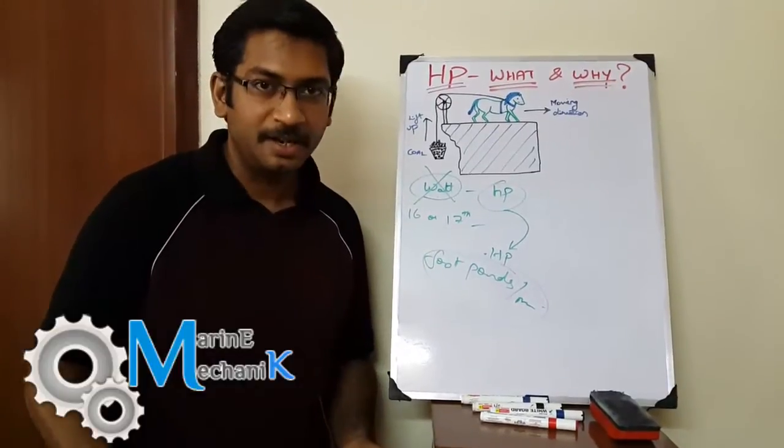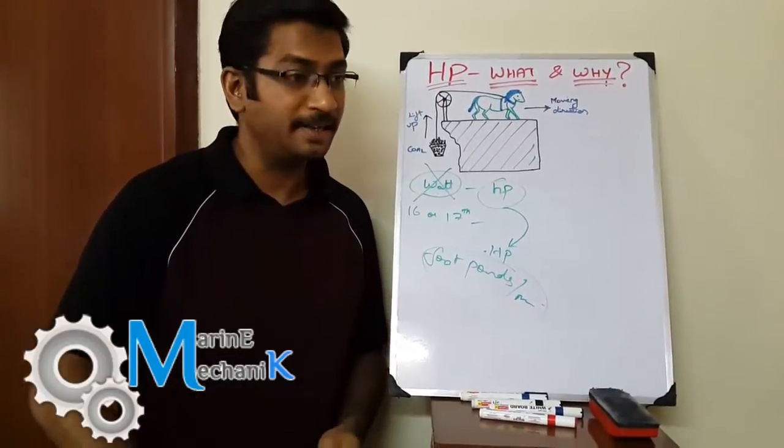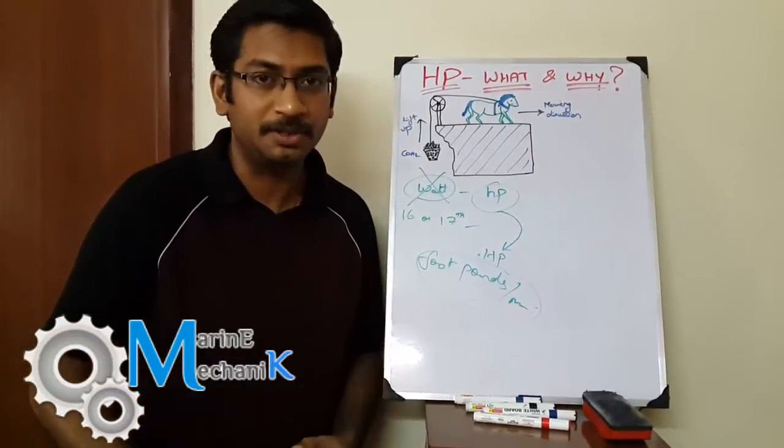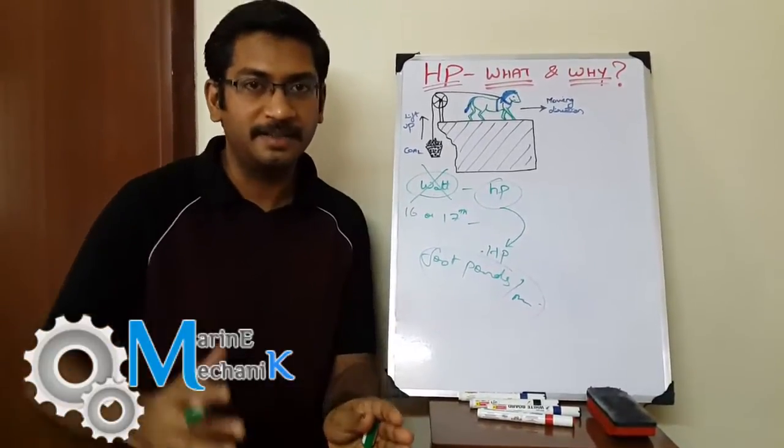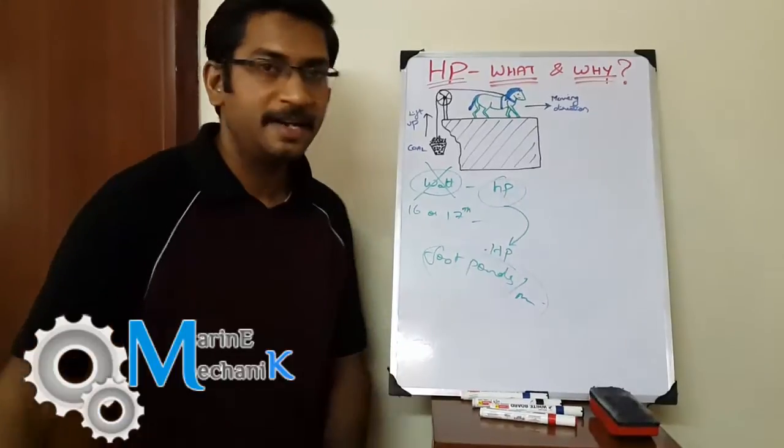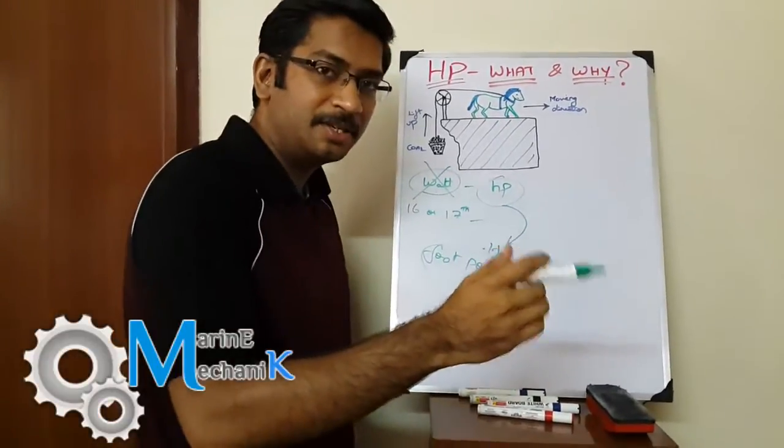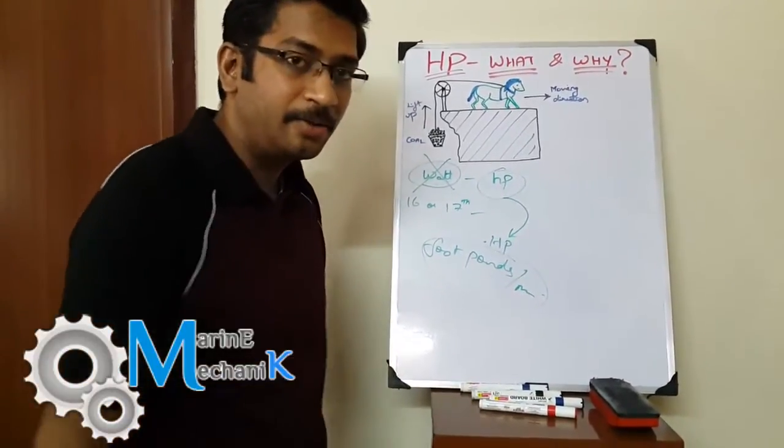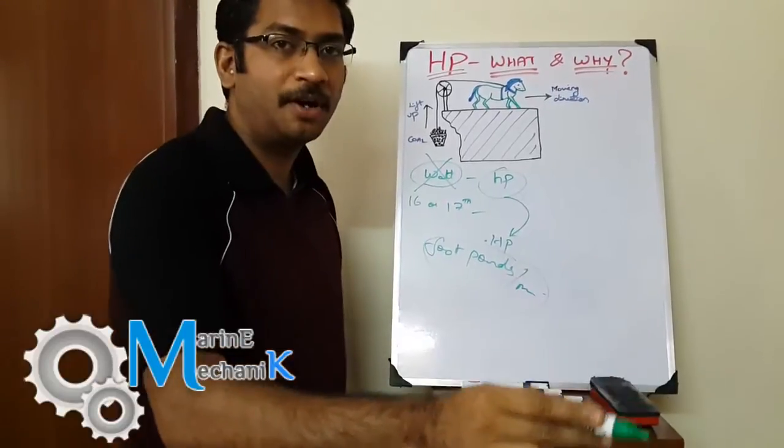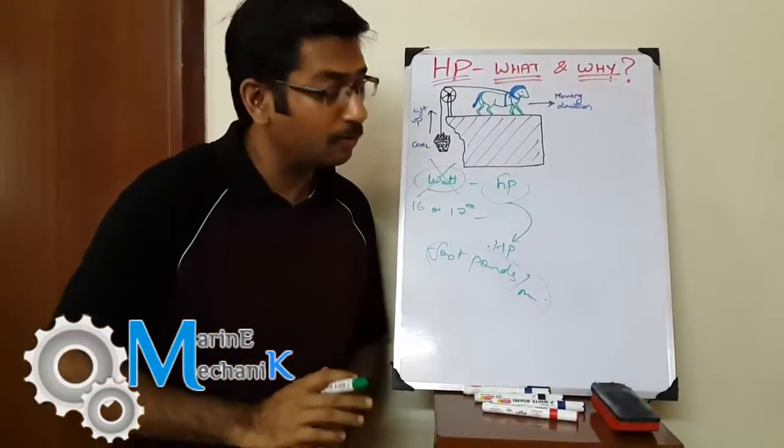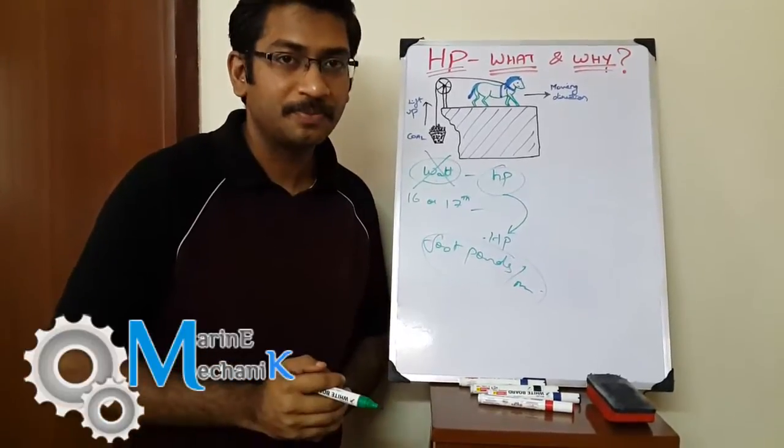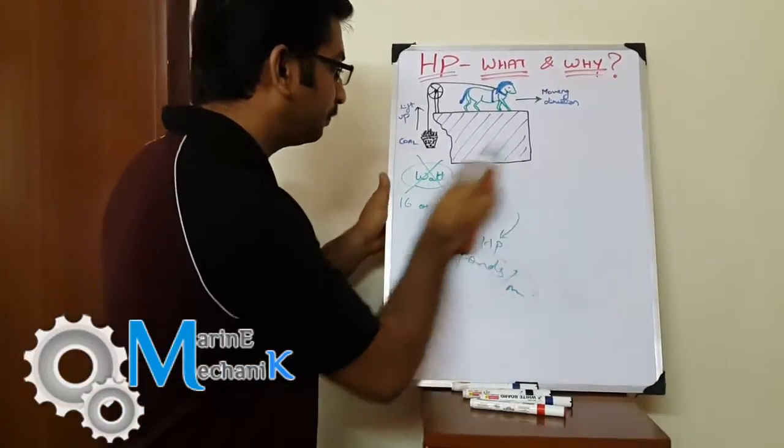We all know James Watt engineered the steam engine. When the steam engine was engineered, he wanted to go to the market and sell his product. How would he do it? He had to compare with the current trend and then compare his product. He engineered a steam engine, took it to the market, and replaced 10 to 50 horses with a single steam engine, which the market was completely amazed by.